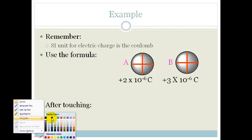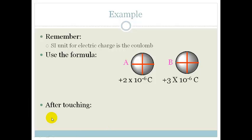And when we bring them into contact, remember that the charge is going to be split between the two. So we can use the equation q equals the q of A plus the q of B all divided by 2. So that would be 2 times by 10 to the negative 6 plus 3 times by 10 to the negative 6 divided by 2.